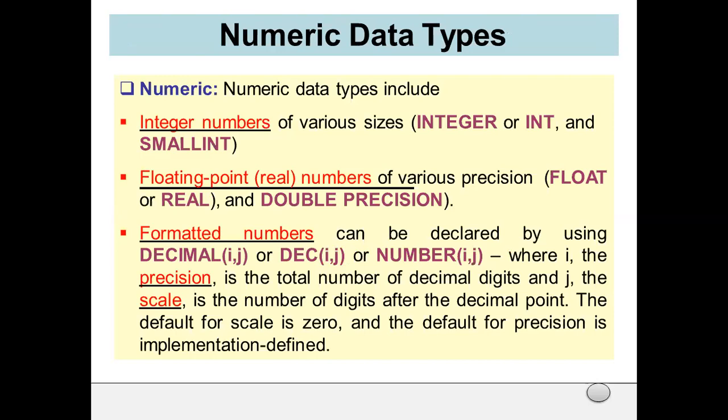Let's study these in detail. First is the numeric data type. Numeric data types include integer numbers of various sizes like INTEGER and SMALLINT, floating-point real numbers of various precision like FLOAT or REAL and DOUBLE PRECISION, and formatted numbers declared using DECIMAL(i,j) or NUMBER(i,j), where i is the precision (the total number of decimal digits) and j is the scale (the number of digits after the decimal point). The default for scale is zero and the default for precision is implementation-defined.